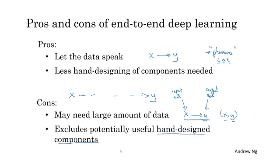And so hand designing a component can really be a way for you to inject manual knowledge into the algorithm. And that's not always a bad thing. I think of a learning algorithm as having two main sources of knowledge. One is the data, and the other is whatever you hand design, be it components or features or other things. And so, when you have a ton of data, it's less important to hand design things. But when you don't have much data, then having a carefully hand designed system can actually allow humans to inject a lot of knowledge about a problem into an algorithm.